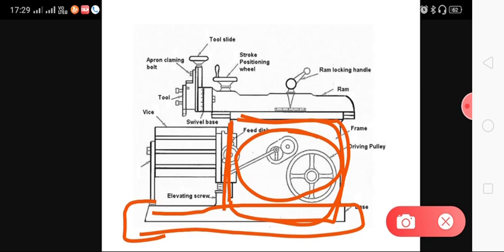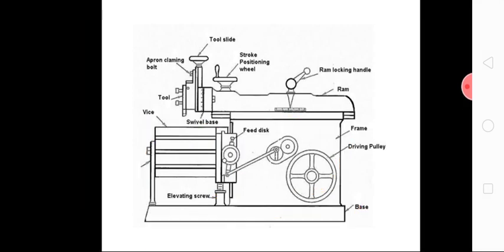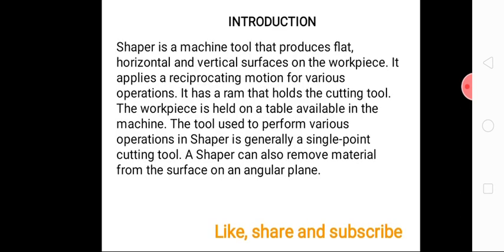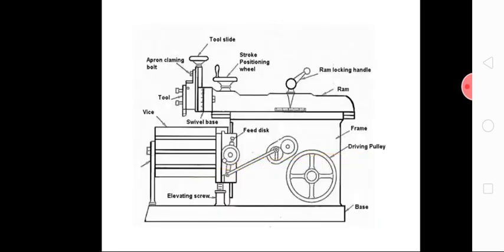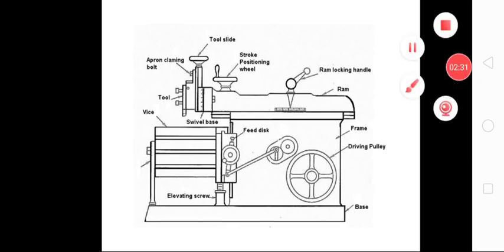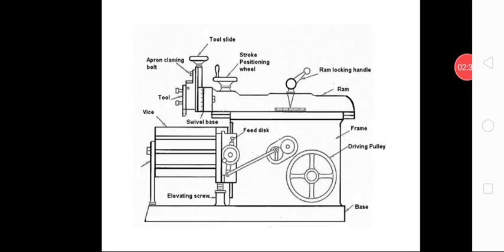In the left portion there is the table. Above the table there is a vice, and above the vice the workpiece is situated — we can clamp the workpiece on the vice. In this table there are two things: one is the cross rail and one is the saddle. The cross rail provides vertical motion to the workpiece, and the saddle provides horizontal motion.